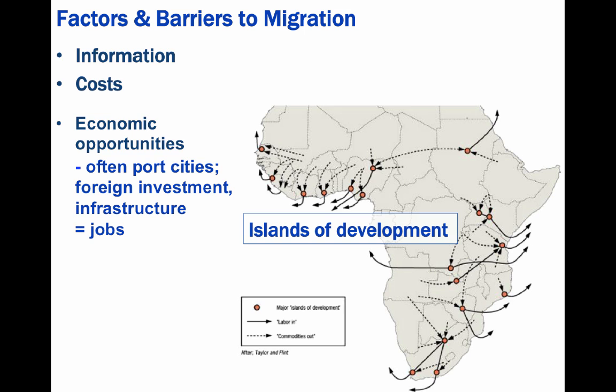Islands of development are places within a region or country where most foreign investment goes, where the vast majority of paying jobs are located, and where infrastructure is concentrated. For example, within the region of West Africa, the oil-producing areas of Nigeria are islands of development. In the mid-1970s, poor people in places like Togo, Benin, and Ghana perceived that economic life was better in coastal Nigeria, and they were lured to the coast for short-term jobs while the oil economy was good.